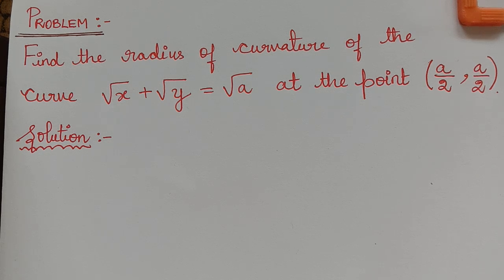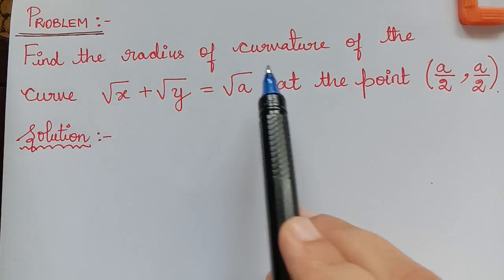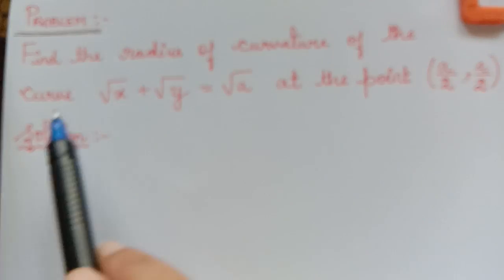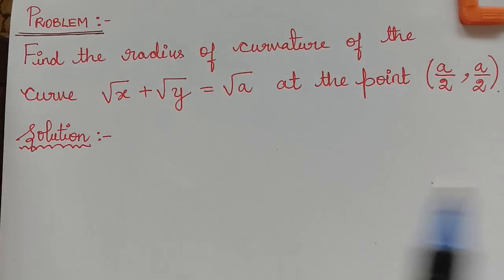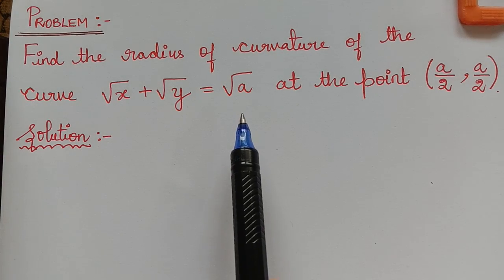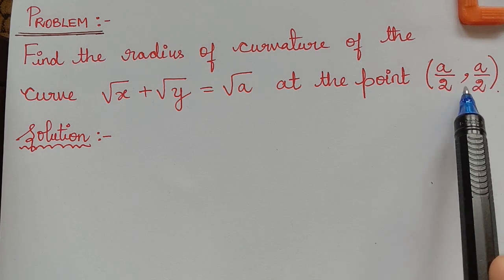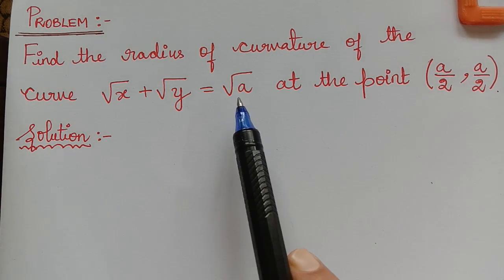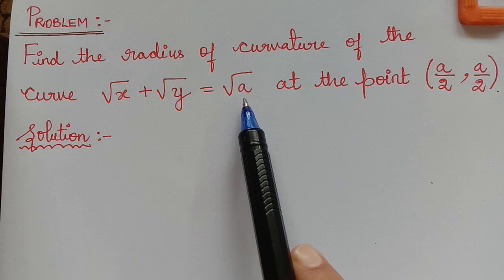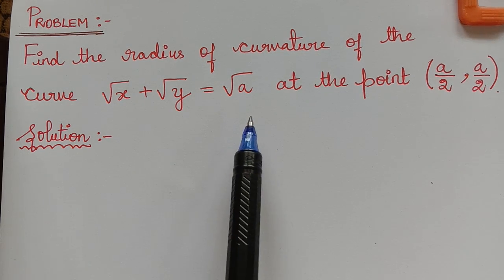Dear students, under the topic radius of curvature, here we have a problem which says: find the radius of curvature of the curve √x + √y = √a at the point (a/2, a/2), where a is a constant and the curve is given in Cartesian equation, that is, an equation given with x and y coordinates.